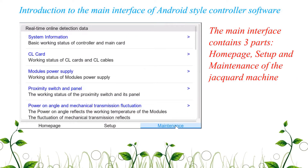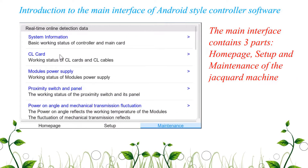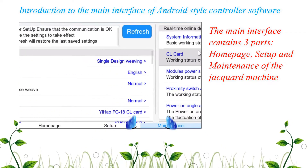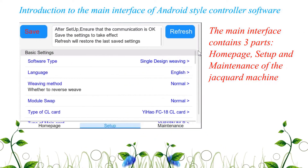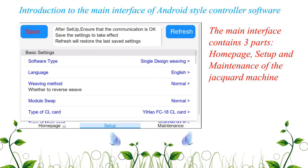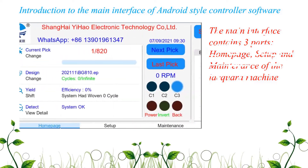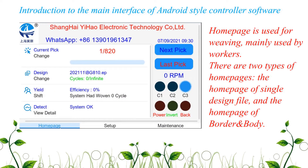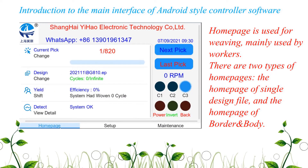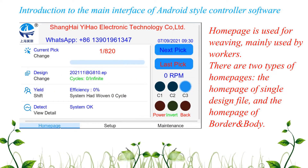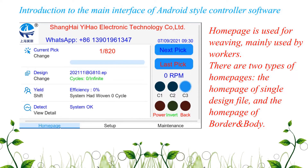The main interface contains three parts: Home page, setup, and maintenance of the Jacquard machine. The home page is used for weaving and is mainly used by workers.